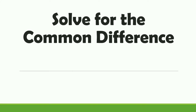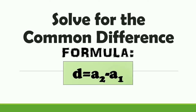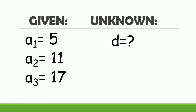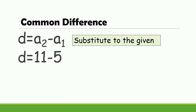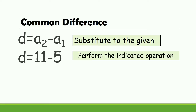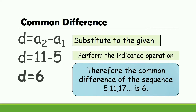Let's now solve for the common difference using the formula d is equal to a sub 2 minus a sub 1. Given: a sub 1 is equal to 5, a sub 2 is equal to 11, a sub 3 is equal to 17, and d is the unknown. Substituting the given: d is equal to 11 minus 5. Performing the indicated operation: 11 minus 5 is equal to 6. Therefore, the common difference of the sequence 5, 11, 17 is 6.